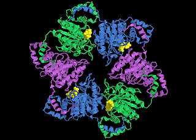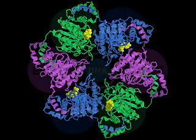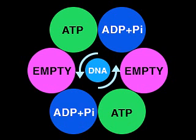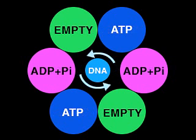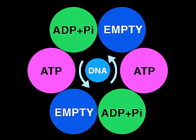Of the six potential ATP binding sites, two opposing ones bind ATP tightly, two are more likely to bind ADP and phosphate, and two are empty. These three states may interconvert in a coordinated fashion as ATP is hydrolyzed, creating a ripple effect that continuously runs around the ring.